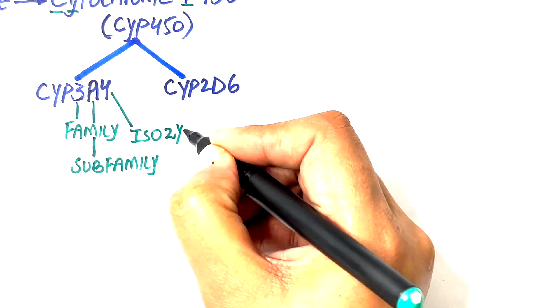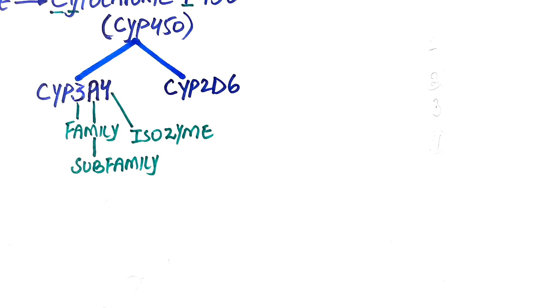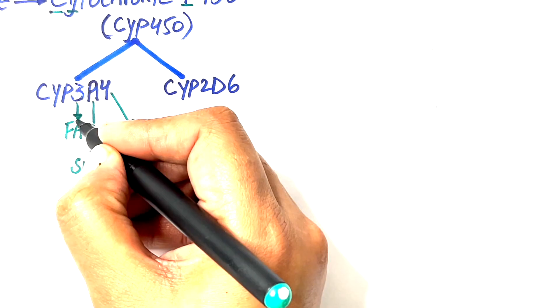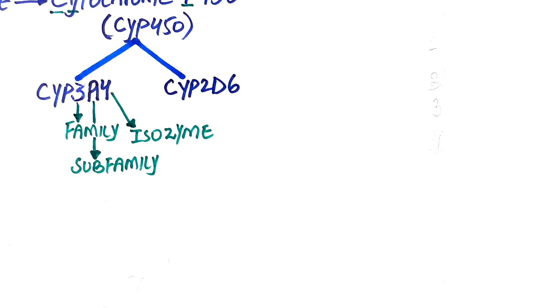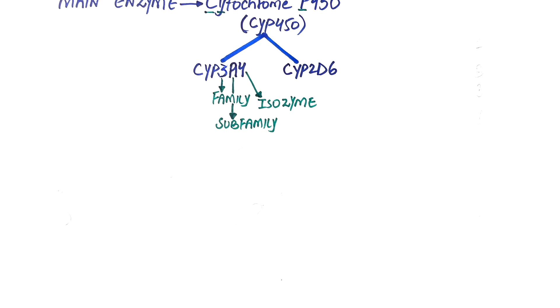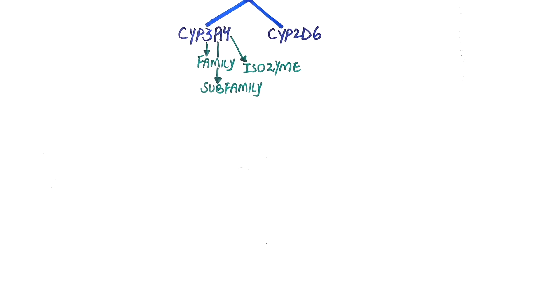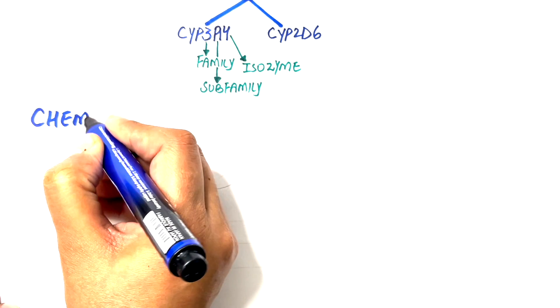In phase 1, three reactions can take place via the cytochrome enzyme family, and the aim is to make the drug hydrophilic or polar enough so that they are not absorbed back by the kidneys or they can easily be excreted out of the body through the kidneys.